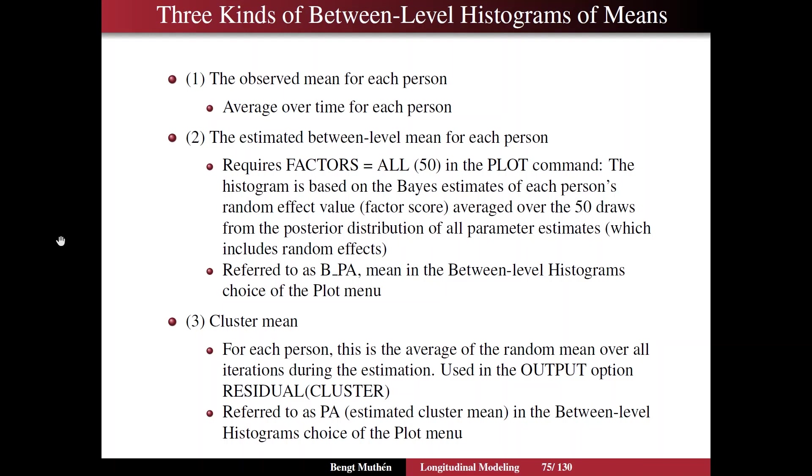On slide 75 I turn to the plot menu option of between-level histograms. I'm going to show you three kinds of between-level histograms for means. The first one is the observed sample mean for each person. So you take the average over time for each person and then plot the 240 persons in the histogram. Very down to earth and straightforward. Option number two is the model estimated between-level mean for each person. So that requires the factors option of the plot command. Factors referring more generally to any latent variable, like a random effect in this case, the random mean.